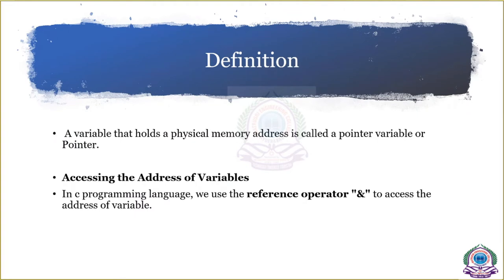What is the definition of pointer? A pointer is a variable which stores the address of another variable. The pointer is the variable that holds a physical memory address, called a pointer variable or a pointer. It is a normal variable but with the special characteristic that it holds the address of another variable. This is the characteristic of your pointer — pointer is used to store the address.